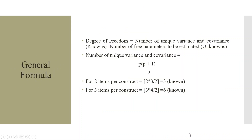The degree of freedom equals the number of unique variances and covariances (knowns) minus the number of free parameters to be estimated (unknowns). As a general rule: if there are two items per construct, there are 3 knowns; if there are three items per construct, there are 6 knowns.